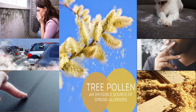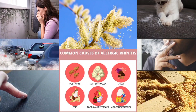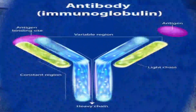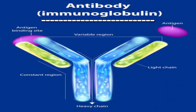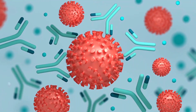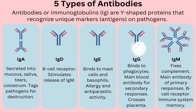Let's understand the simple mechanism here. Antibodies are proteins that protect our body when any unwanted substance enters. Antibodies are also known as immunoglobulins, and these immunoglobulins are used by the immune system to identify foreign pathogens like bacteria and viruses. There are 5 types of immunoglobulins: IgG, IgM, IgA, IgD, and IgE. Among these, IgE antibodies identify and start attacking the allergen.